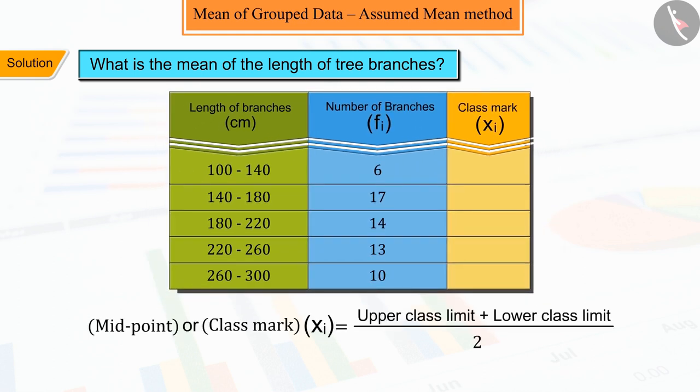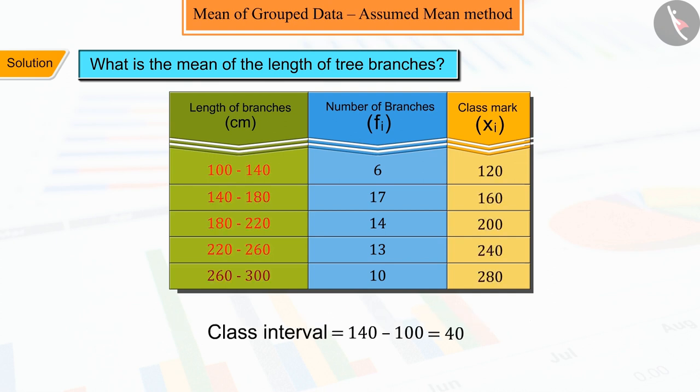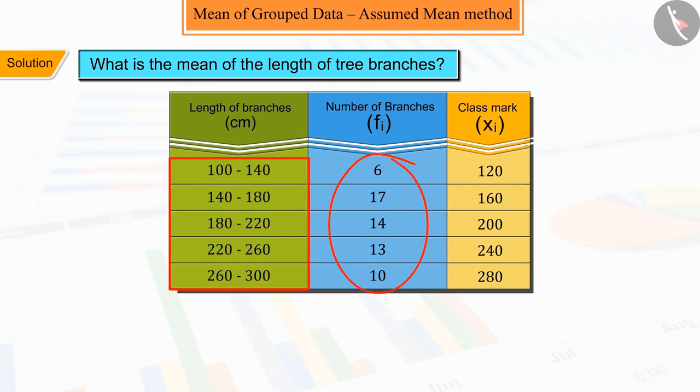We will use the class mark formula, where the class size is 40. Here, the number of branches represents the frequency of each class interval, that is fi.